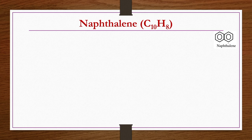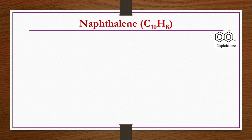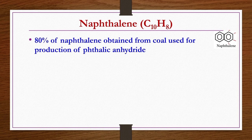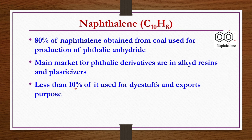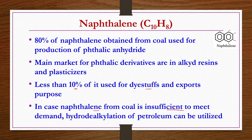Naphthalene has the structure of two benzene rings attached together, giving C10H8 with 10 carbon atoms and 8 hydrogen atoms due to alternating double bonds. 80 percent of naphthalene obtained from coal is used for production of phthalic anhydride. The main market for phthalic derivatives is in alkyd resins and plasticizers. Less than 10 percent is used for dye stuffs and exports. If naphthalene from coal is insufficient, hydro dealkylation of petroleum can also be done to obtain naphthalene.